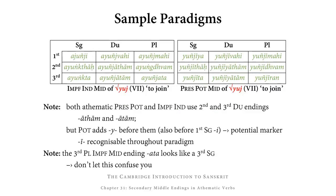Let's look at how these endings are added to the stem of an athematic verb. The verb we're using here is yuj, meaning 'to join', which is Class 7. It thus has the strong present stem yuñaj and the weak present stem yuñj. Given that this is the middle, we are only using the weak stem yuñj.